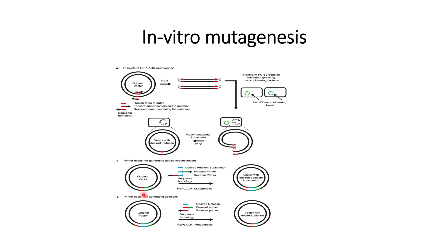This is how mutation is done by the in vitro method. If someone wants to add a desired sequence within the original vector, they design forward and reverse primers that contain the desired addition or substitution. The desired addition, shown in blue, is combined with the forward and reverse primers.